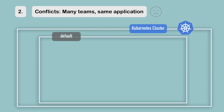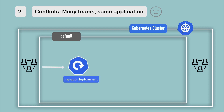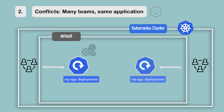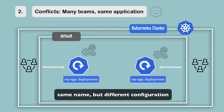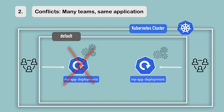Another use case where you'll need namespaces is if you have multiple teams. Imagine two teams using the same cluster and one team deploys an application called my-app-deployment with a certain configuration. If another team had a deployment with accidentally the same name but a different configuration and applied it, they would overwrite the first team's deployment. If they're using Jenkins or some automated deployment tool, they wouldn't even know they disrupted the other team's work.